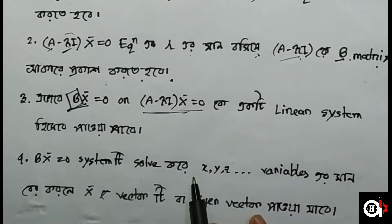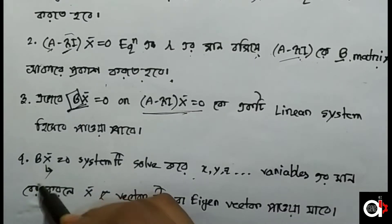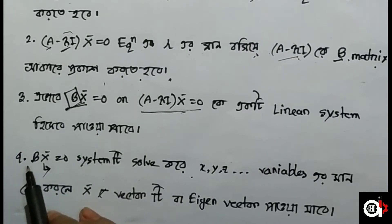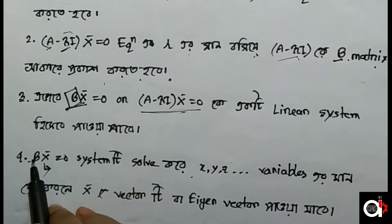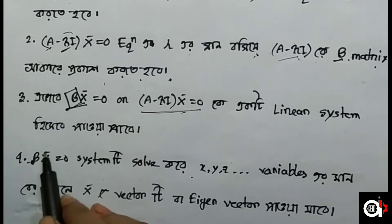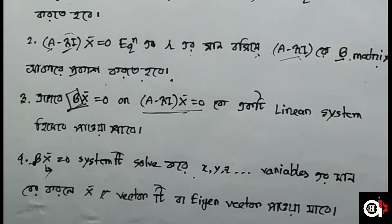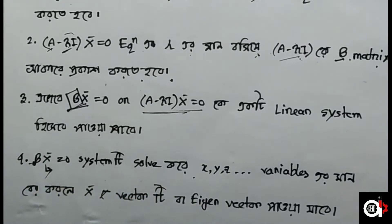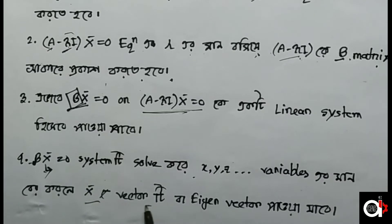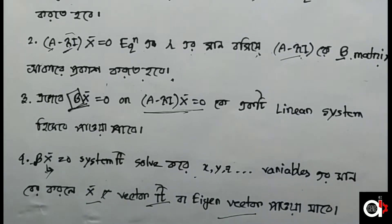We solve the system for a 2×2 or 3×3 square matrix, giving us the unknown vector components x, y, z. The vector formed by these variable values is our eigenvector. Any scalar multiple of this vector is also an eigenvector corresponding to that eigenvalue.